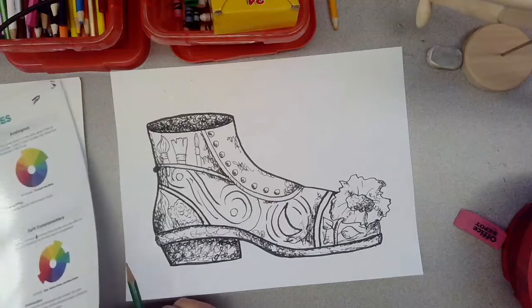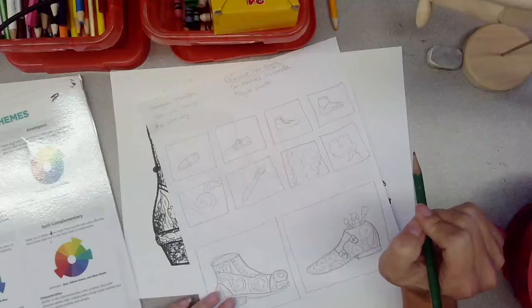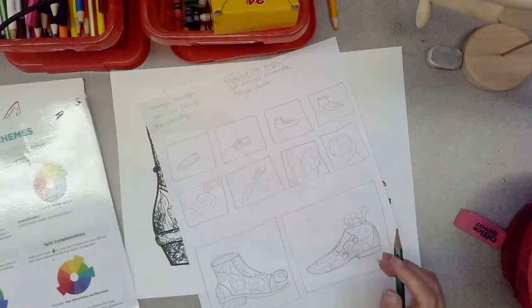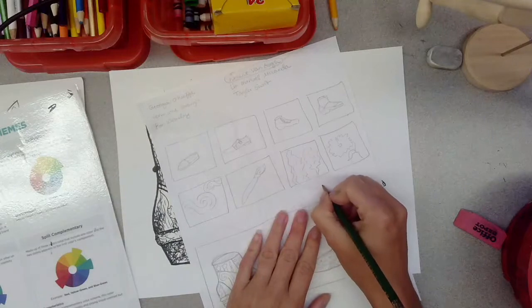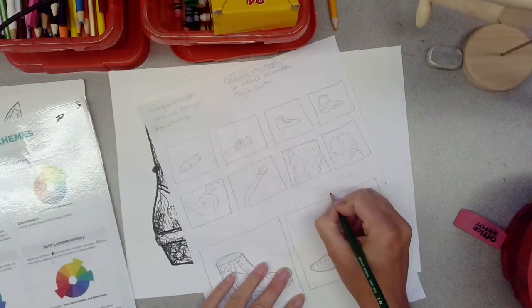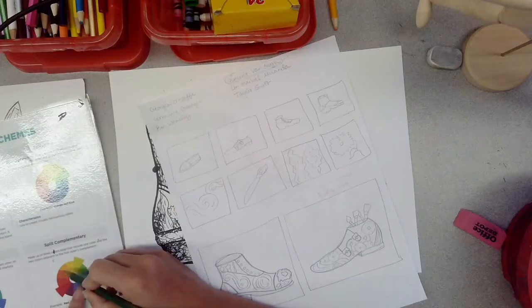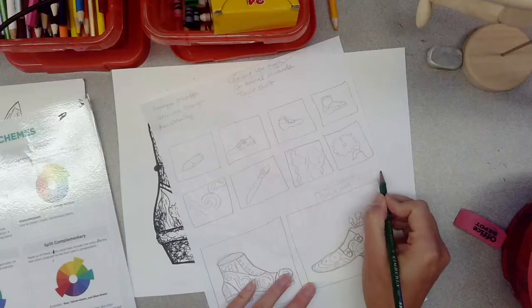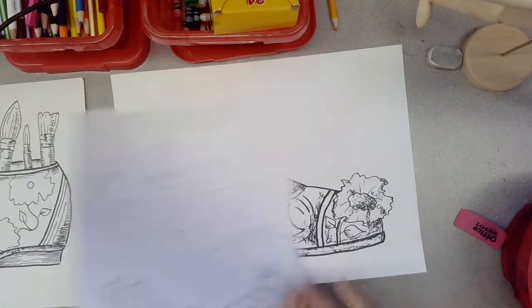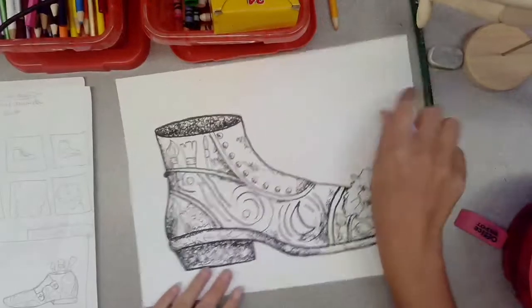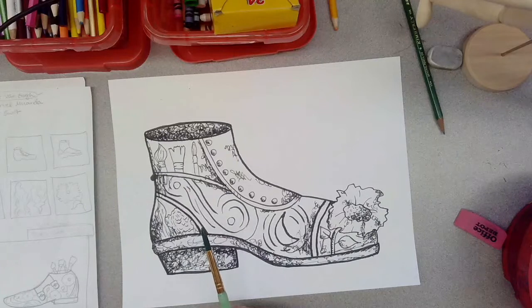Take a look at your design, how many sections do you have, how many colors do you think you're going to need, and then decide upon a color scheme. I am going to pick split complementary and I'm going to use the color blue, the color violet, and then the color yellow orange. Those are my main colors.